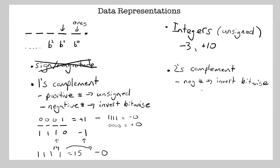We say if it's a negative, you invert bitwise, and then you add one. So let's see how this works. If we have, again, four-bit numbers, and we write zero, zero, zero, one.